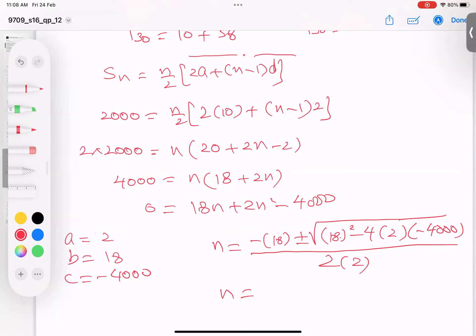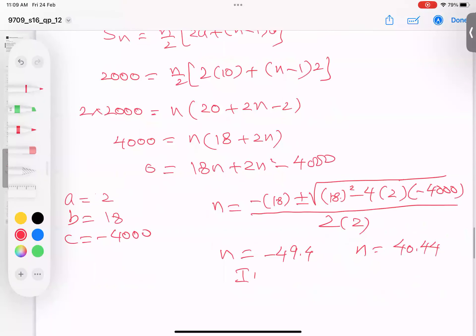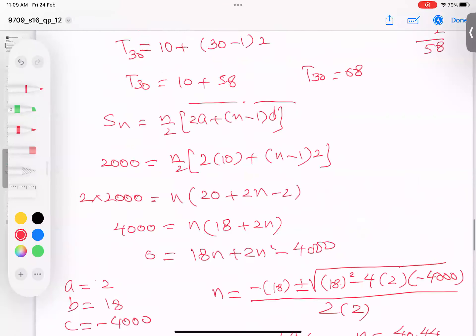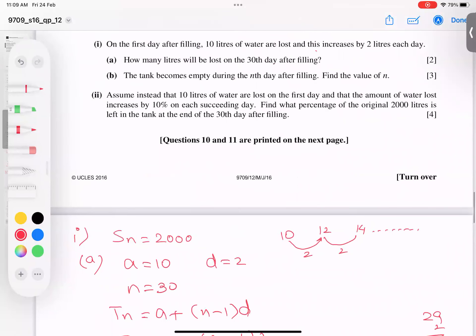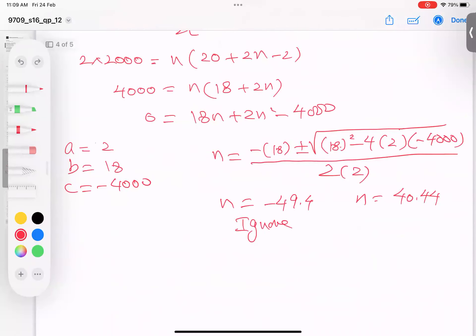When I type it into the calculator, I get two values: n = -49.4 and n = 40.44. Let me recheck. Yes, this is very clear - we ignore the negative value because negative days aren't possible. The question asks for the value of n, so naturally n is 40 or thereabouts.